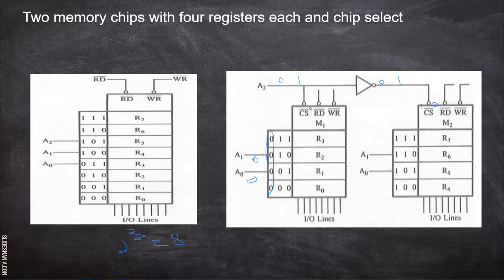After selection of that chip, addressing takes place — whether it is 00, 01, 10, etc. Depending upon that, the respective registers will be read. Then comes the read signal and write signal — whether we are reading or writing. Based on that, reading and writing operations on the respective register take place and the respective IO lines are enabled.